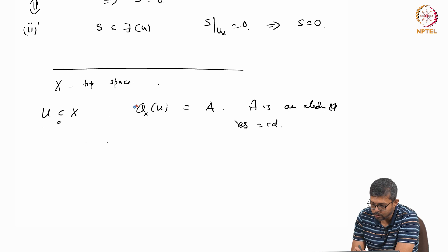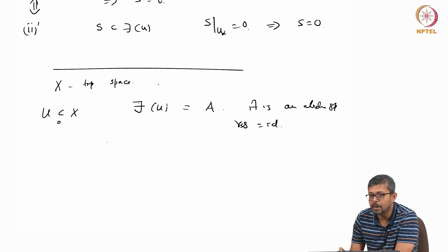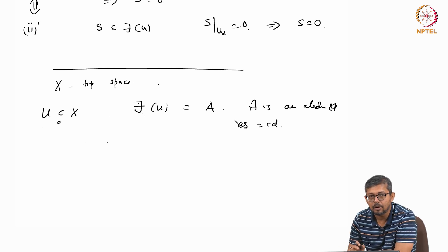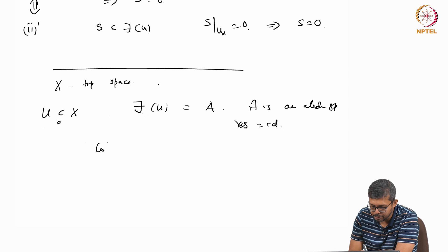Let us rename this as F of U rather than O_X of U. So F is a pre-sheaf where all restriction maps are identity. This is called the constant pre-sheaf.